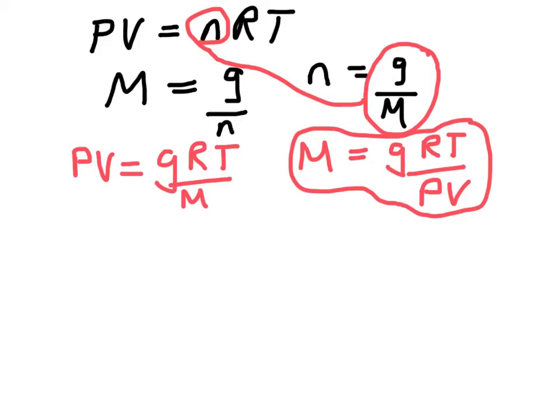We can further manipulate that equation, so I'm going to go ahead and write it again. Okay, PV. Now, you might notice that G over V, what would be grams over volume? Well, that's your density.